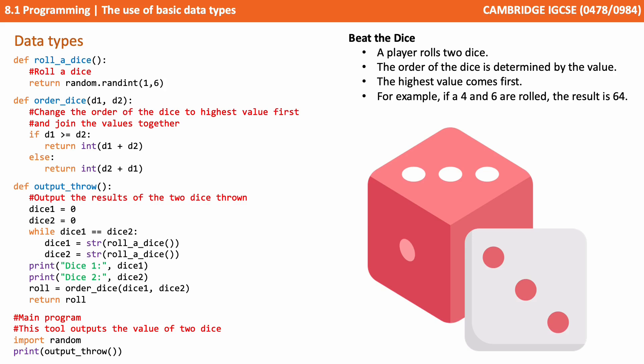Let's have a look at a simple Python program that's called beat the dice. It allows the player to roll two dice. The order of the dice is determined by the value, and the highest value comes first. For example, if they roll a 4 and a 6, the output would then be 6, 4. We're joining the two numbers together with the biggest one first.